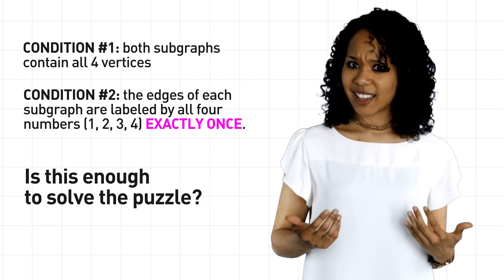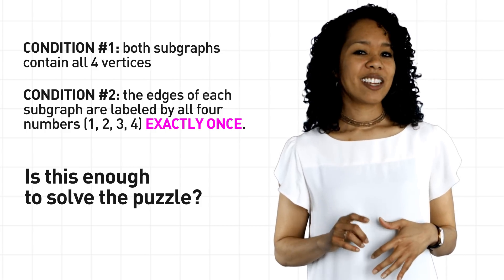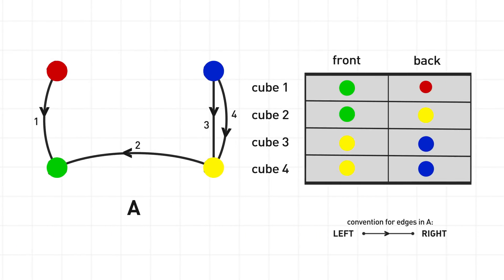And is that it? Well, take a look at this graph. It satisfies the previous two conditions, but it's also problematic. Notice that blue appears twice on the back. The reason is because the blue vertex has two edges directed away from it. And here's another problem. Neither red nor blue appear on the front. That's because neither the red nor the blue vertex has an edge directed towards it. These are both things we want to avoid.